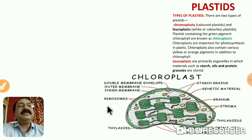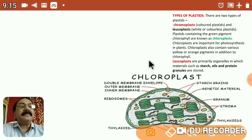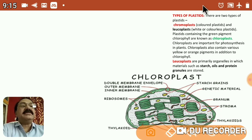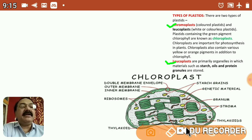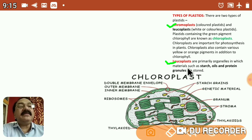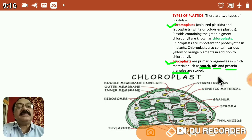Now let us learn another important cell organelle — plastids. The word 'plastid' indicates any bag-like structure with an outer envelope, within which is present some material. There are various types of plastids: chromoplasts and leucoplasts. 'Leuco' means colorless; leucoplasts are plastids containing an outermost double-layered unit membrane and are associated with storage of material like starch, oil, and protein.